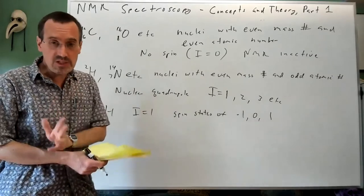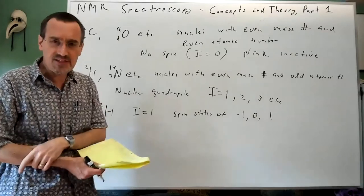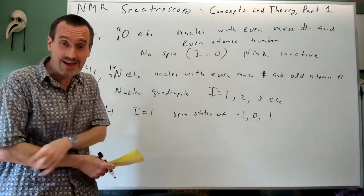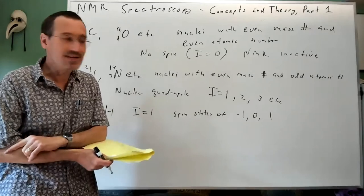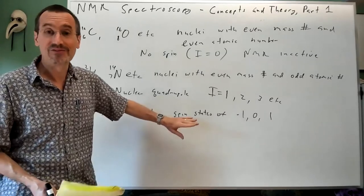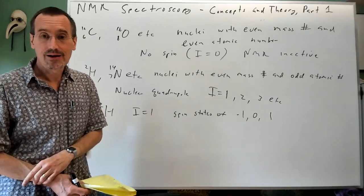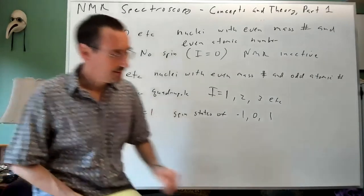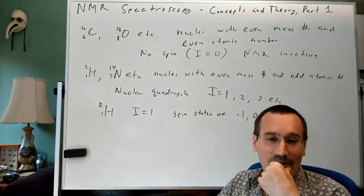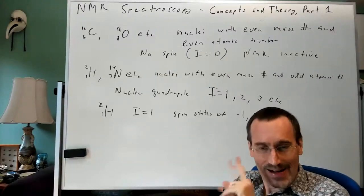Most of you have already seen a manifestation of this phenomenon. Does anyone know what you've already seen that is a manifestation of deuterium having a spin number of one? Is it something to do with the chloroform peak? Yeah, something to do with the chloroform peak.